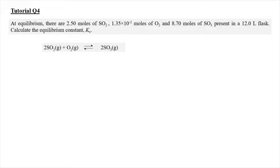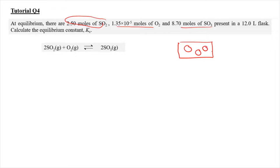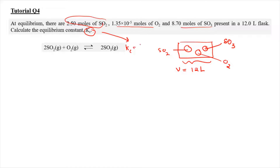For tutorial question 4, at equilibrium there are 2.50 mol of SO₂, 1.35×10⁻⁵ mol of oxygen, and 8.70 mol of SO₃ present in a 12-litre flask. We need to find the Kc. The Kc equals the concentration of SO₃ to the power of 2 divided by the concentration of SO₂ to the power of 2 multiplied by the concentration of O₂. This is the Kc expression for the reaction.